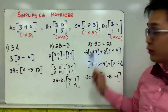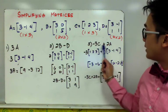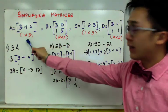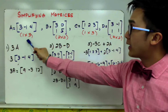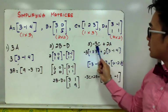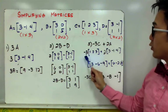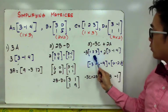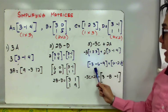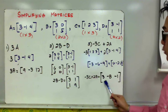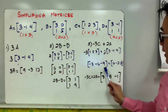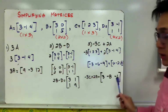And for our third example, we have negative 3C plus 2A. C is a 1 by 3, and A is another 1 by 3, so we can combine them. But first you need to simplify the scalar multiplication of each matrix. So we have negative 3 times 1, 2, 3, plus 2 distributed to 3, negative 1, and 4. So we'll have negative 3 plus 6, which is 3, negative 6 plus negative 2, which is negative 8, and negative 9 plus 8, which is negative 1.